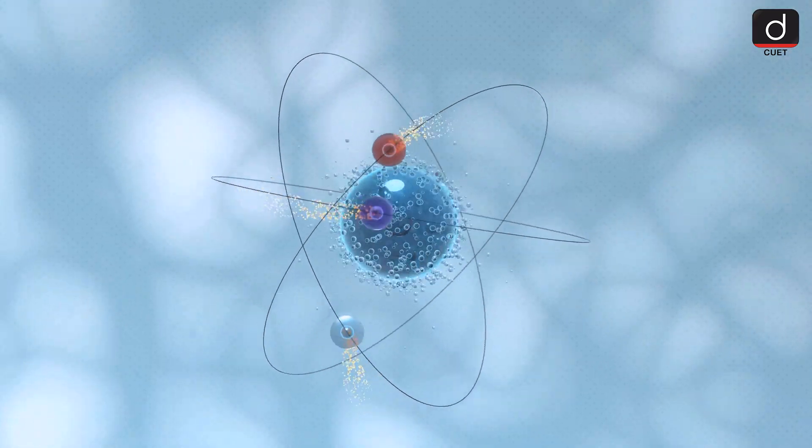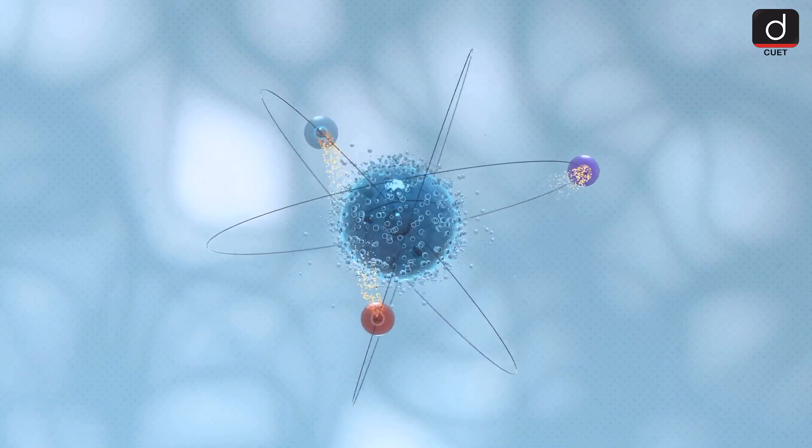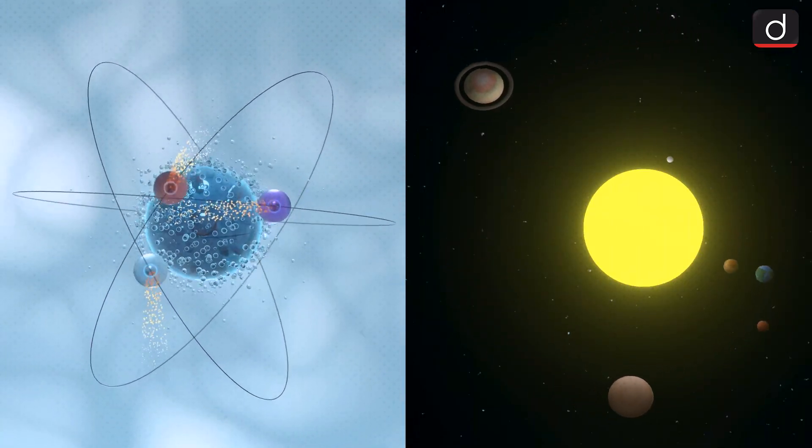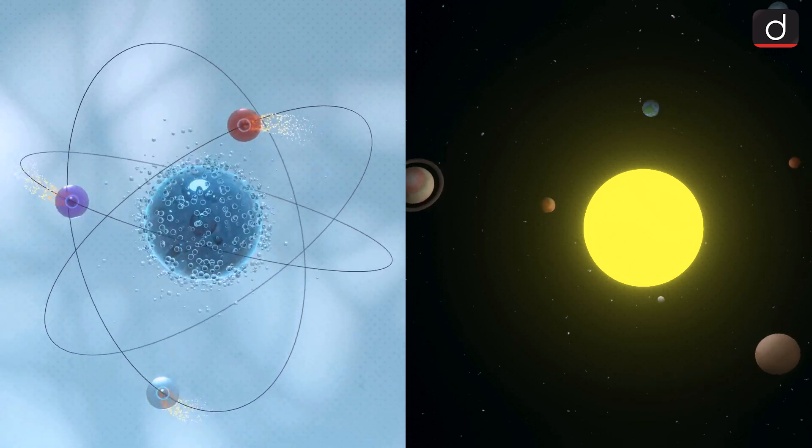Think of an atom like a mini solar system. At the center is the nucleus, like the sun in our solar system. Around the nucleus, electrons move in orbits, just like planets revolve around the sun.